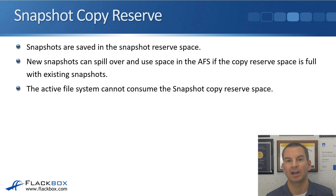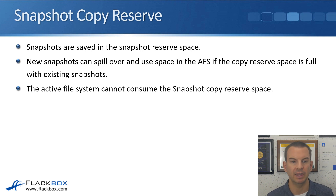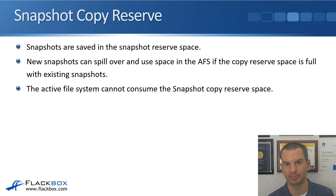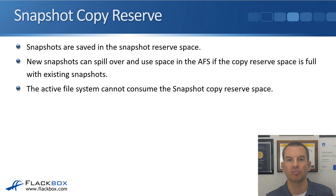Snapshots are saved in the snapshot reserve space. New snapshots can however spill over into space in the active file system if the copy reserve space is full with existing snapshots, but the active file system cannot consume the snapshot copy reserve space. So with a default NAS volume at five percent reserve, snapshots go into that five percent space. If that fills up and new snapshots are created, they start using space reserved for the active file system — but this is a one-way restriction: the snapshot reserve is reserved purely for snapshots.